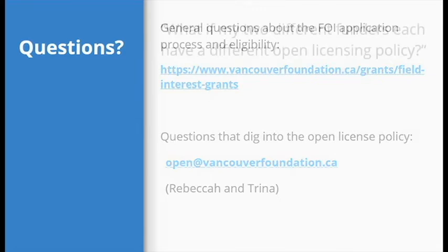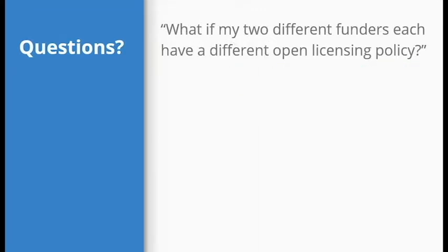Another question: what if a project is funded by two different funders and they have a completely different licensing policy? The answer will be based on the individual situation. Most funders — though not all — give grantees copyright over the materials produced as part of the project, and so you have control to do open licensing. But if you come across a funder with a different license restriction, let us know, and that might mean we have a conversation with that other funder to see what opportunities exist. We haven't come across that exact scenario yet because the first round of funding has just opened and we don't have a clear answer — and we're okay saying we don't know yet.